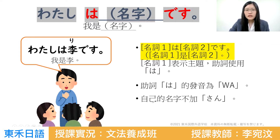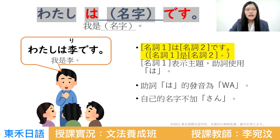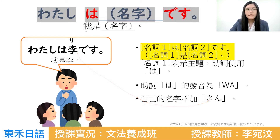注意這樣很重要的事情：你自己的名字後面不會加上さんよ。所以你不能講「私は李さんです」，這樣是錯的。你要講「私は李です」，這樣就可以囉。